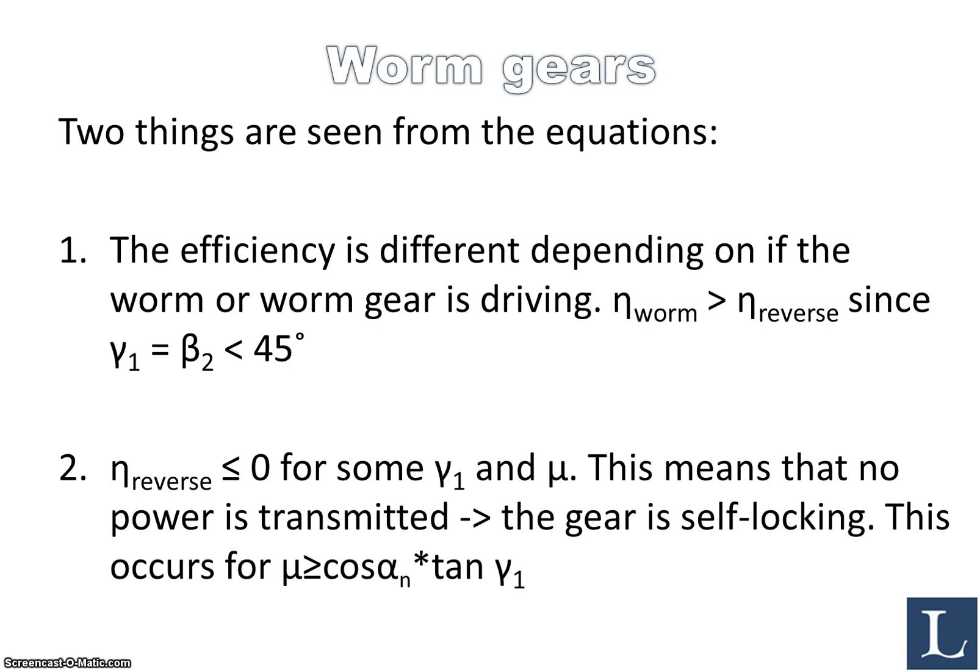So you can try to put those numbers and some relevant numbers for the other parameters and then you will see what comes out in the end. Now the second thing that becomes obvious is that when you do the reversed operation, meaning that you're trying to rotate the worm gear, the efficiency actually becomes less than zero for some values for the gamma_1 and some values of the coefficient of friction. Now what does this mean? Well, if you have an efficiency which is lower than 1, that means that there is no power going through your system. You're not transmitting any power. This means that the gear is self-locking, so nothing really happens. If you try to rotate the worm gear, the worm will not move at all. And this occurs when mu is greater or equal to cosine for the pressure angle times tan for the gamma_1.